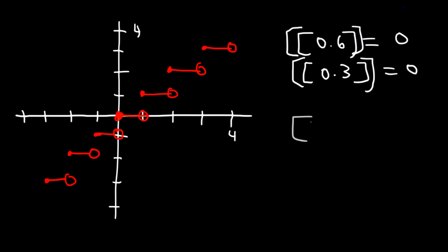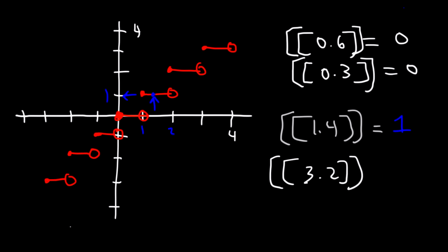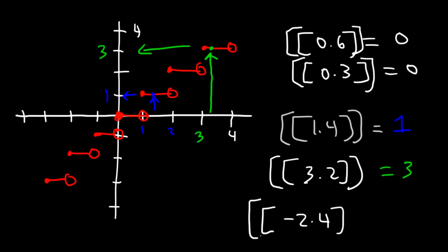For example, to find the greatest integer of 1.4, choose x = 1.4, which is between 1 and 2. The y-value is 1, so the greatest integer of 1.4 is 1. For 3.2, it's between 3 and 4, corresponding to a y-value of 3. For negative 2.4, it's between negative 2 and negative 3, corresponding to a y-value of negative 3. You can also just go to the left on the number line to get negative 3.